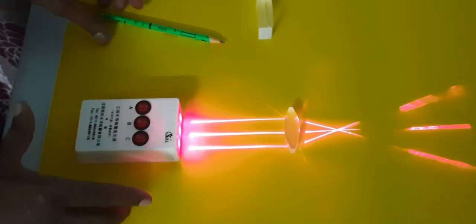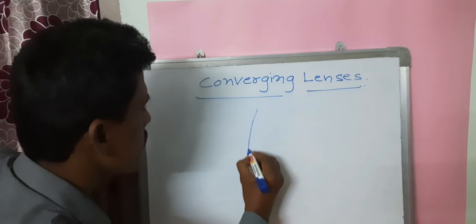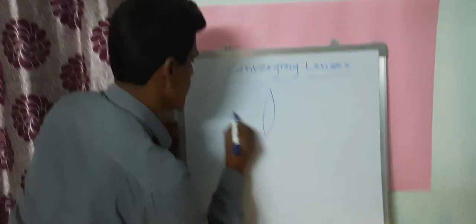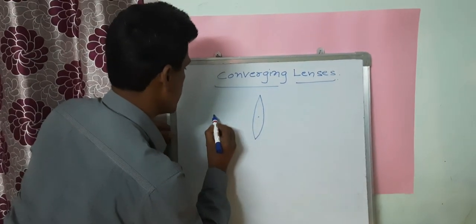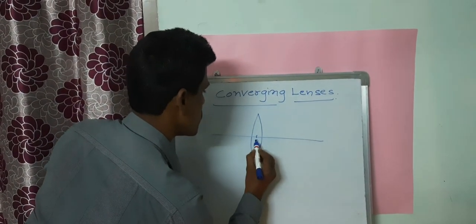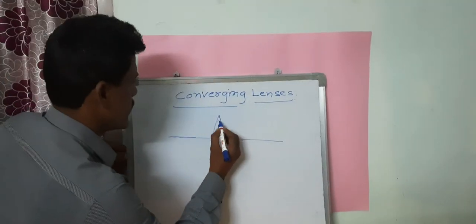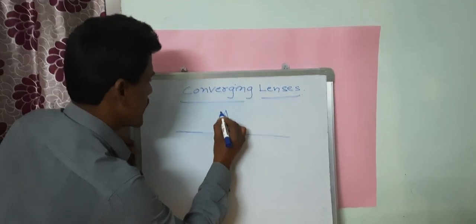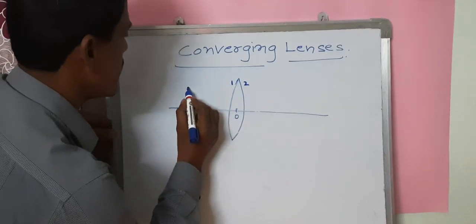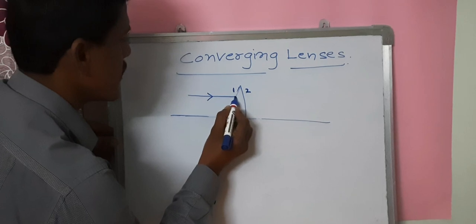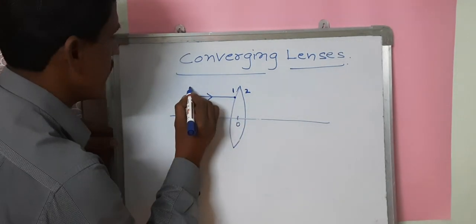To understand this more clearly, I am going to explain on the board. This is the convex lens. The midpoint of the lens is the optical center. This is the first refracting surface of the convex lens, and this is the second refracting surface. If a ray is parallel to the principal axis, it is incident on the first refracting surface.